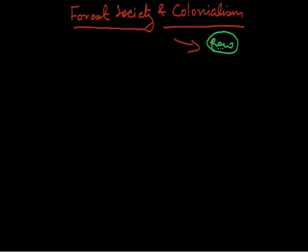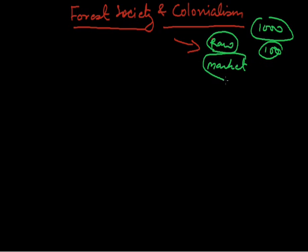For that they established colonies in different parts. And later on, when these industries produced different types of products — for example, they produce 1000 shirts but the population of Europe is 100 — the production is extra. So what they need? Market also. In search of market and raw material, these imperial nations established colonies in different parts of the world like in the Americas, Africa, Asia, and Oceania, where they get their raw material from forests.